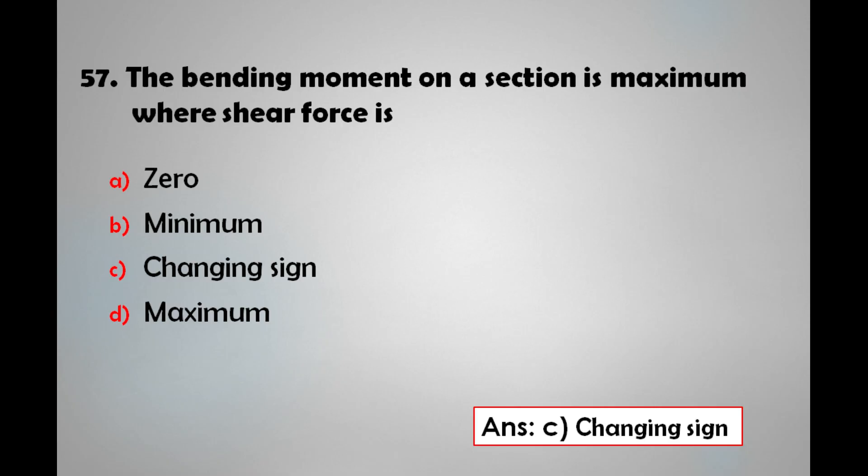The bending moment on a section is maximum where the shear force is: a) zero, b) minimum, c) changing sign, d) maximum. The answer is: the bending moment on a section is maximum where the shear force is changing its sign.